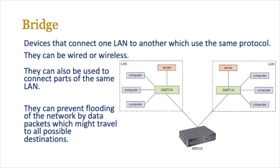Bridges can prevent flooding of the network by data packets which might travel to all possible destinations. For example, a server sending data to a particular computer might be connected to 10 switches, and it sends data to all of them. Switches are intelligent enough to deal with it, but if you've got hubs, everything goes everywhere. Sometimes bridges can act as a switch — they know exactly where every other switch is on the network, and when data is received, they pass it on to the right switch, which then passes it on to the right computer.